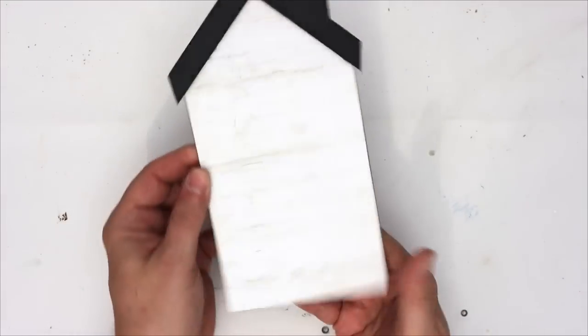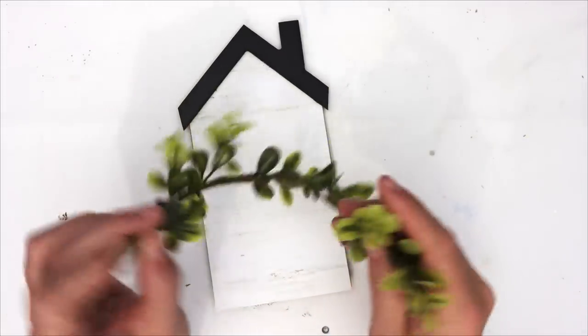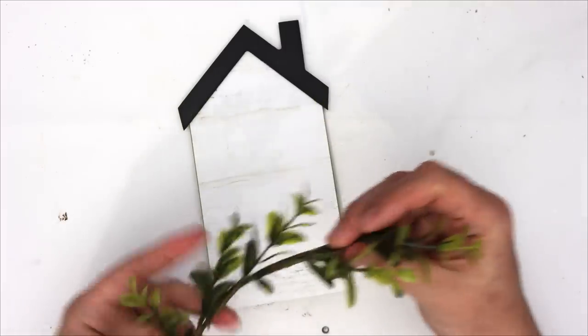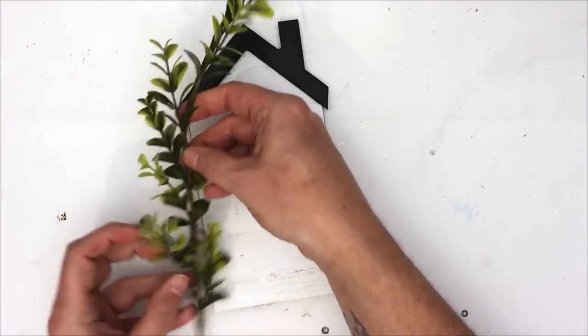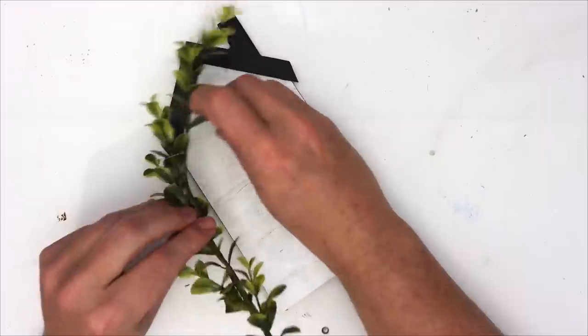Now for my next DIY, I'm going to use this house blank. I really love these. Think that they're super cute. I had this piece of boxwood wreath that was a leftover from the Target dollar spot. And I took it apart and kind of unwound it.